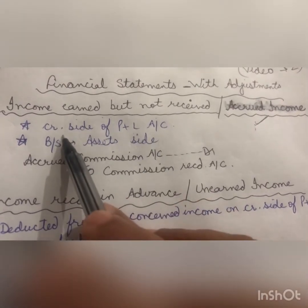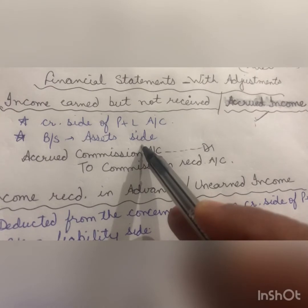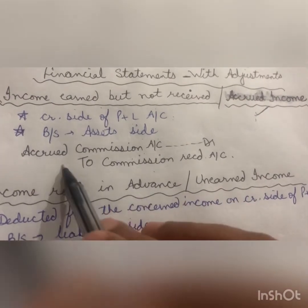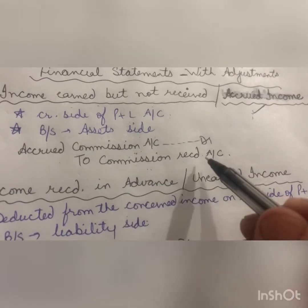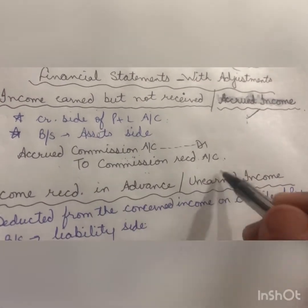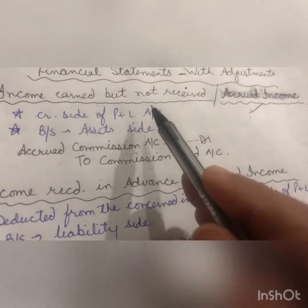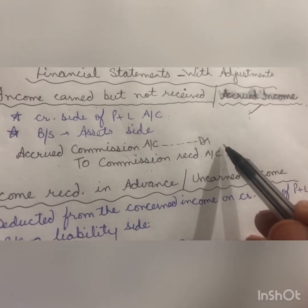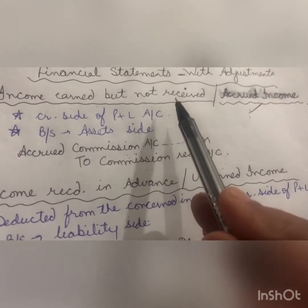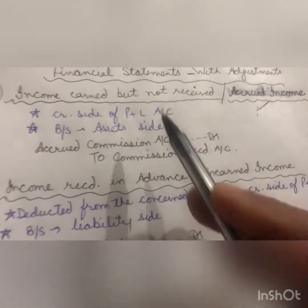Because this income belongs to the current year — we earned it in the current year — it will be shown on the credit side of the Profit and Loss account. Accrued income is a current asset, so it will also be shown on the asset side of the Balance Sheet. The adjustment entry is: Accrued Commission Account debit, to Commission Received Account.